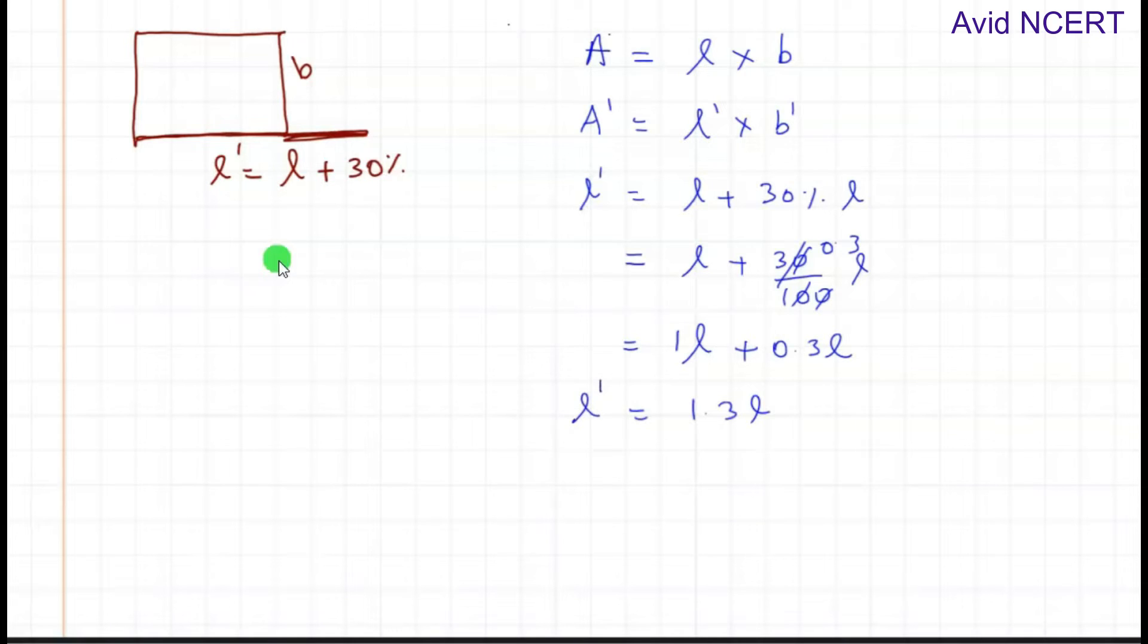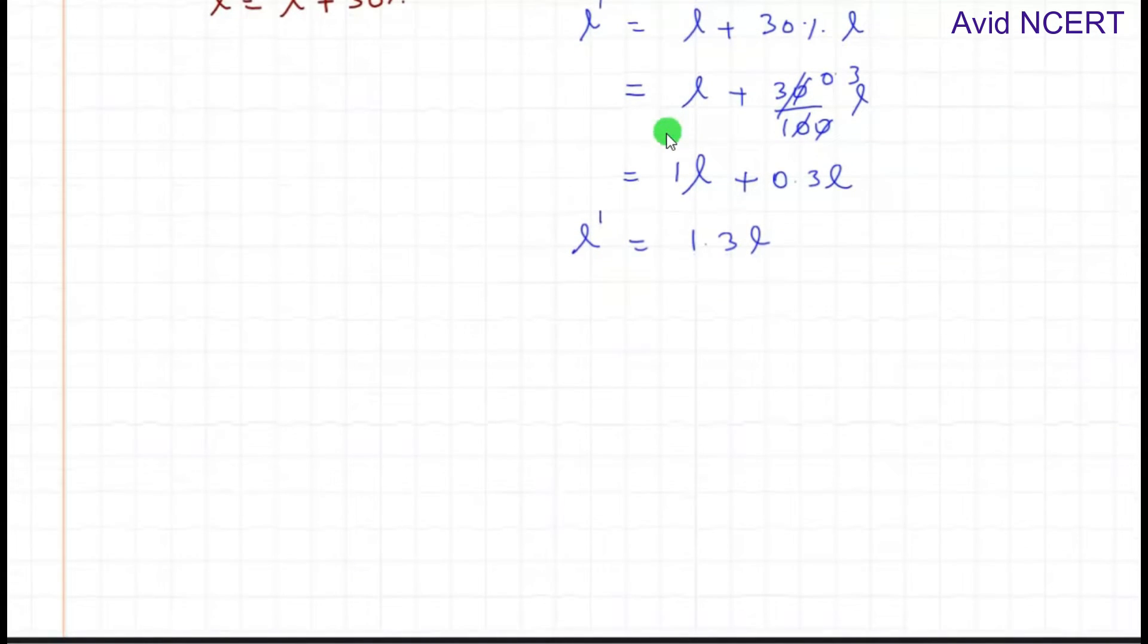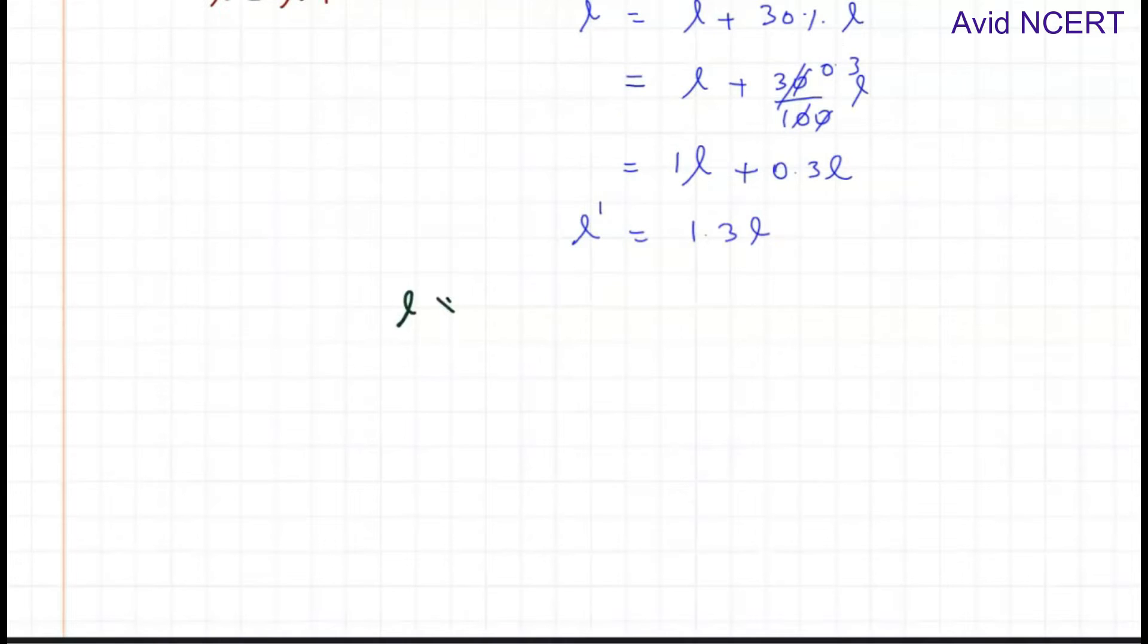Now to find b dash, we can equate these two areas: l times b equals l' times b'. So l times b, which is the old area, equals l dash times b dash. Therefore, l times b equals 1.3l times b dash.